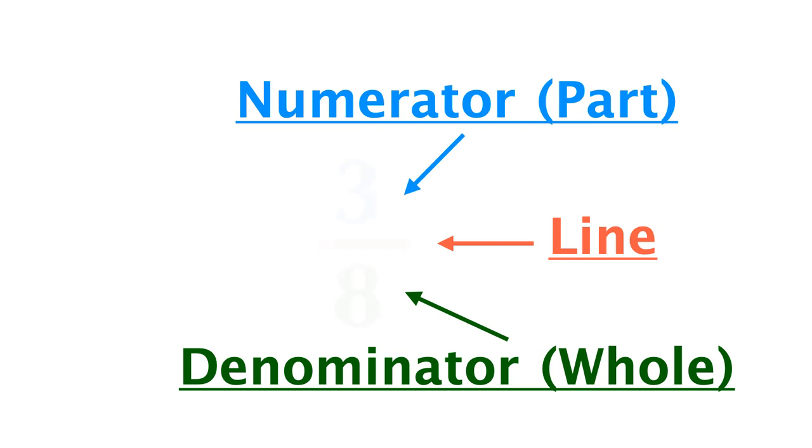Here we have a fraction 3 over 8 or 3 eighths. This fraction denotes 3 parts of something out of 8 parts of a whole.